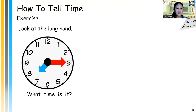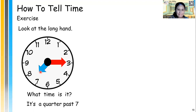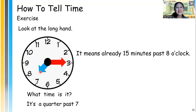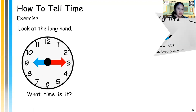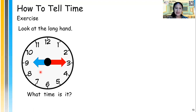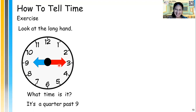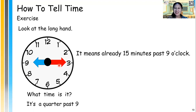What about this one? What time is it? It's a quarter past 7. Excellent! It means it's already 15 minutes past from the previous hour. What about this one? It's quarter past 9. Good job — it means already 15 minutes past 9 o'clock.